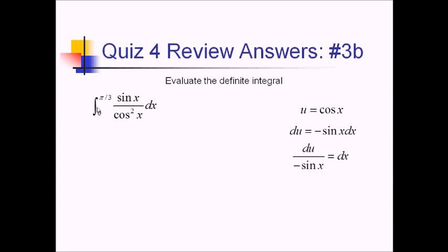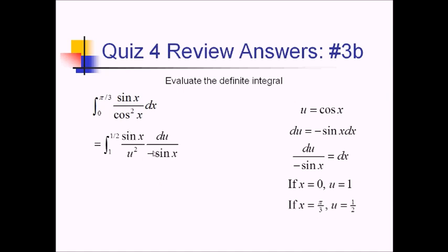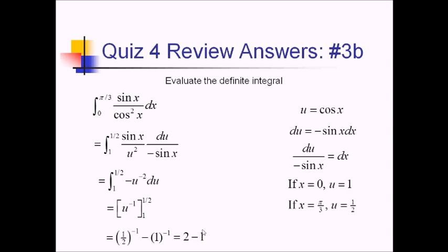I also have to replace the x limits of integration with u values. If x is 0, u is cosine of 0, which is 1. If x is pi over 3, u is cosine of pi over 3, which is 1 half. So I've got the integral from 1 to 1 half — which seems backwards — of sine over u squared times du over negative sine of x. The sines cancel, leaving negative u to the negative 2 du. Using the reverse power rule, the exponent bumps up to negative 1, and dividing by negative 1 gives positive u to the negative 1, evaluated from 1 to 1 half. Plugging in: 1 half to the negative 1 is 2, minus 1 to the negative 1 is 1, so the result is 2 minus 1, which equals 1.